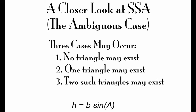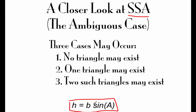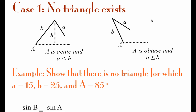Next we're looking at something called the ambiguous case when dealing with the Law of Sines. We can identify these ambiguous cases when we're given a side-side-angle setup. There are three different things that can happen: no triangle exists, one triangle exists, or two triangles might exist. To figure out which case we're in, we need to find the height of our triangle using the formula H equals B times sine of A.